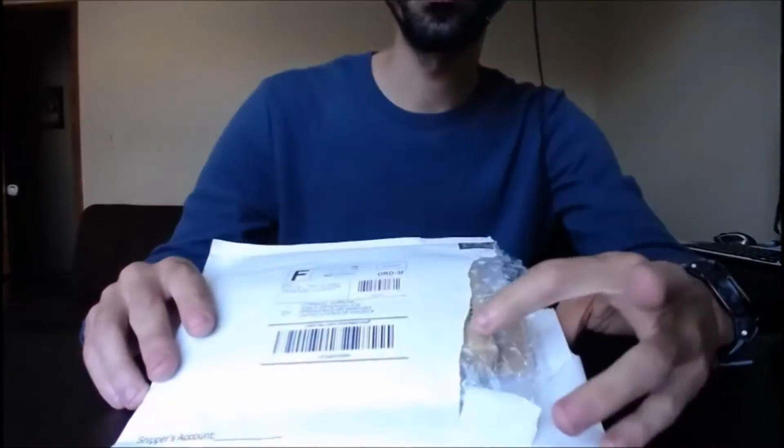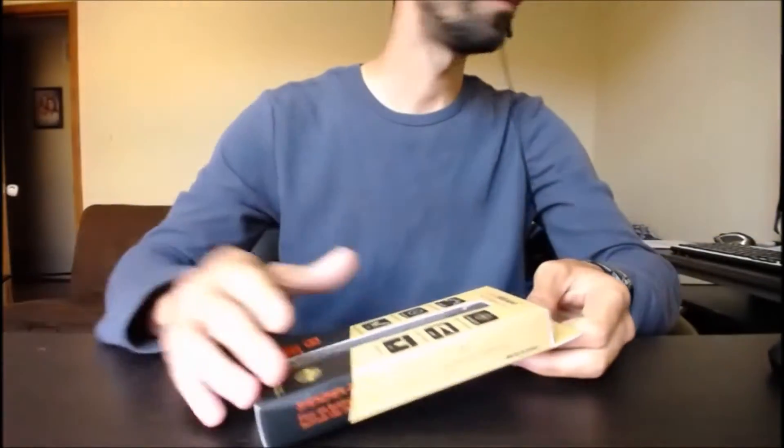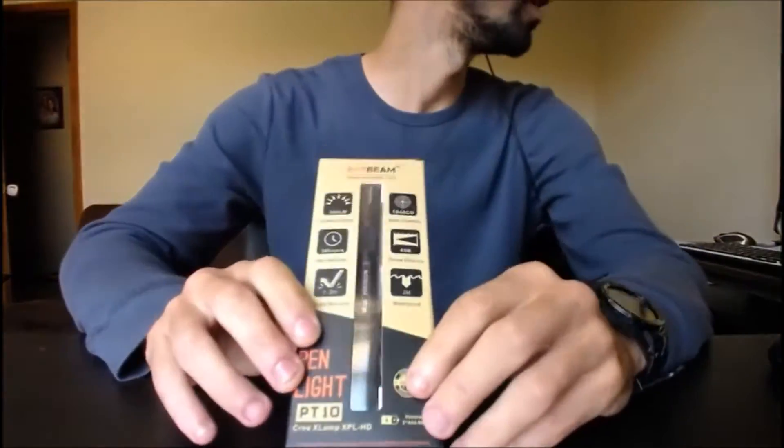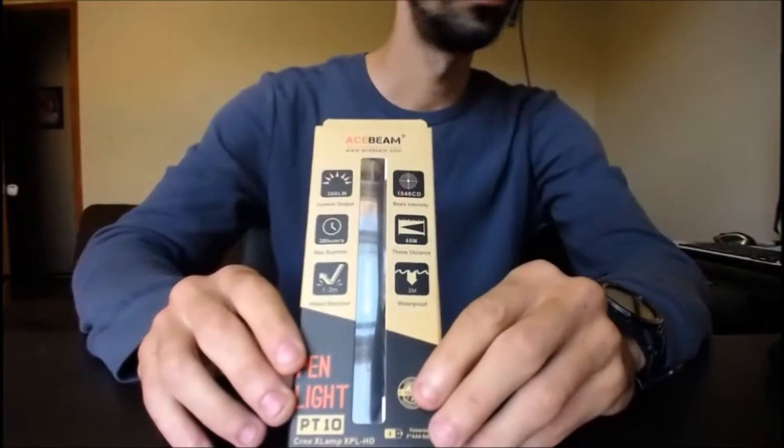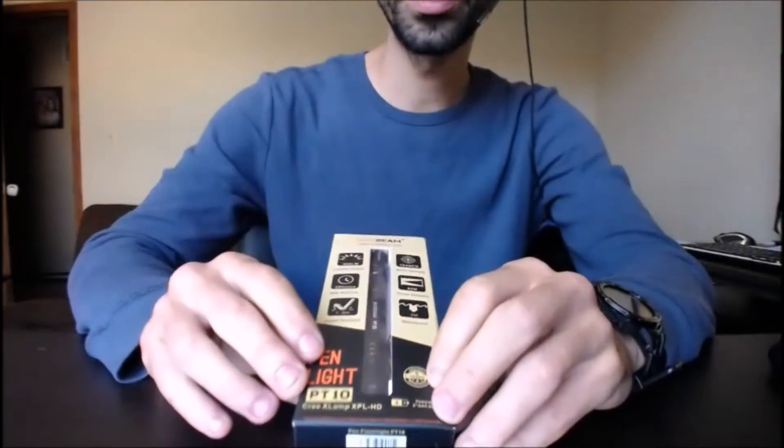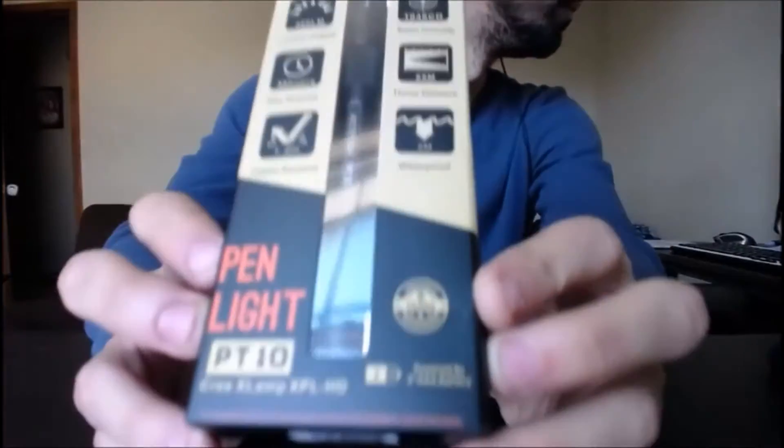All right guys, guess what? It came. Email from eBay, it actually came by airmail. So it took a week to arrive. It's the new Acebeam PT10 flashlight, AAA flashlight. Let's check some specs before we get to it.